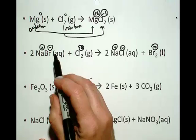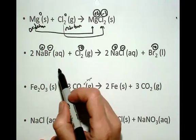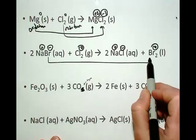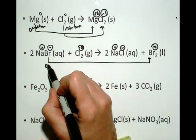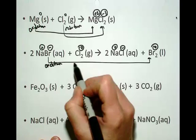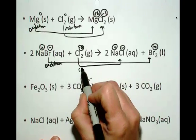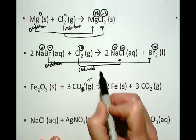Hopefully you were able to do that. You can recognize that the bromide ion going to bromine has undergone oxidation and the chlorine is reduced because it has gained an electron.